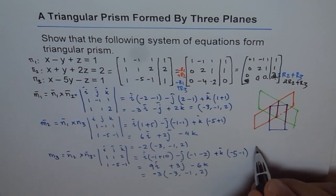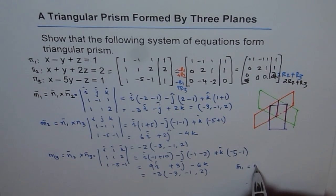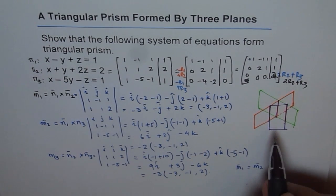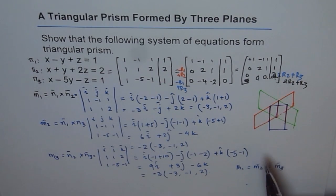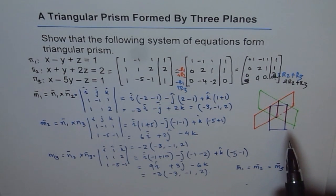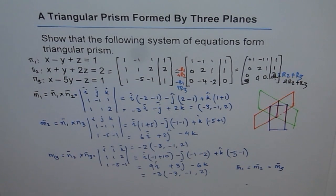We see that M1 = M2 = M3. The slope of all three lines of intersection is identical, meaning all three lines are parallel. The three planes, none of which are mutually parallel, intersect in three different parallel lines — and that is precisely what makes this configuration a triangular prism.